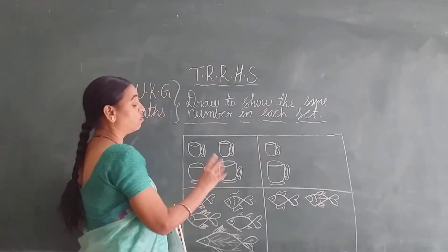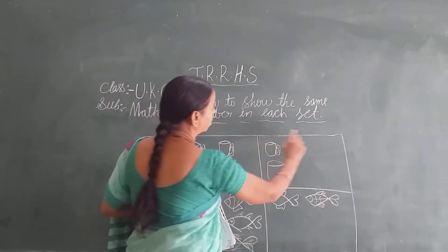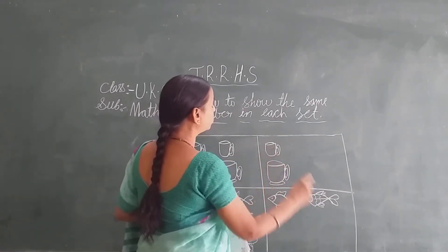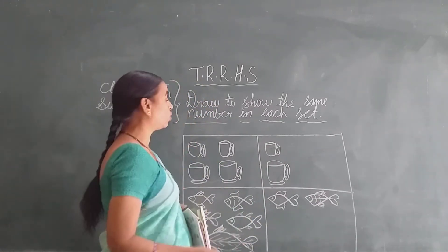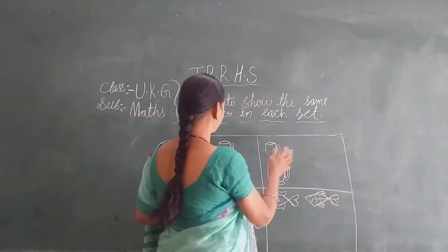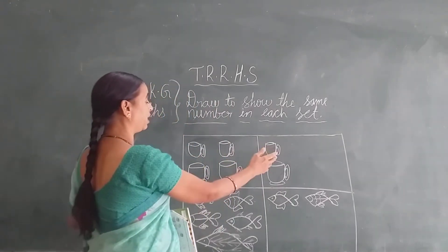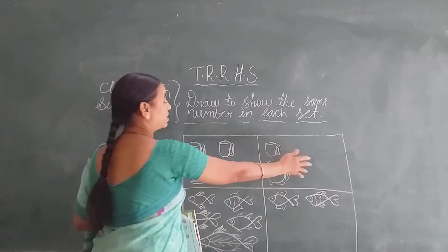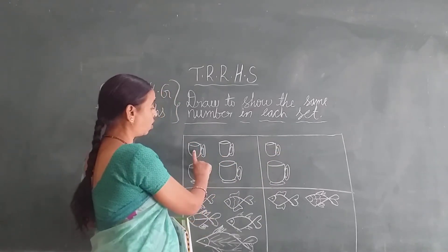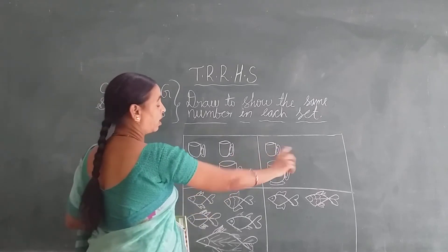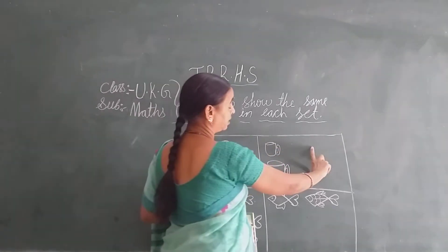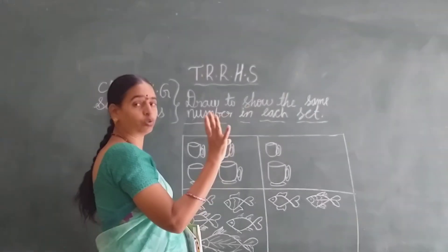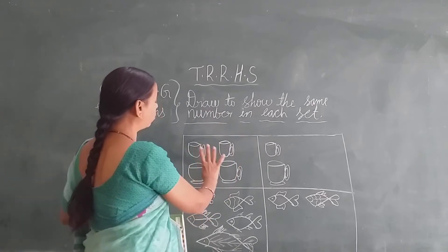How many pictures are there? 4 pictures. And here in this box, how many pictures are there? Only 2 pictures. So to make this box also the same, we have to make more pictures. So how many pictures do we have to draw here? 2 are there, so we have to draw 2 more pictures in this box.